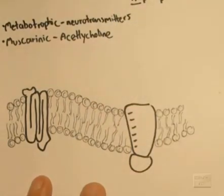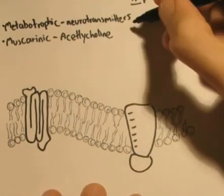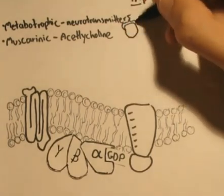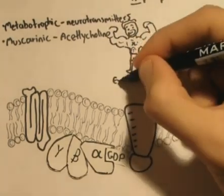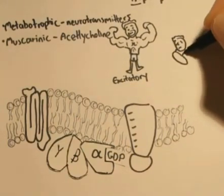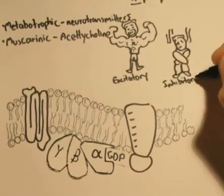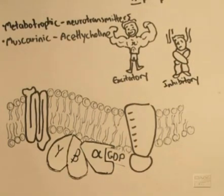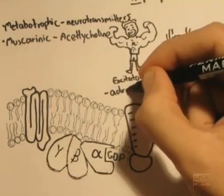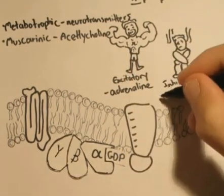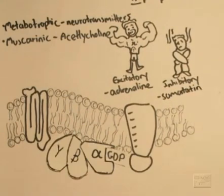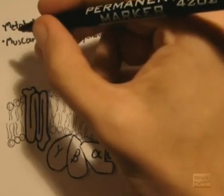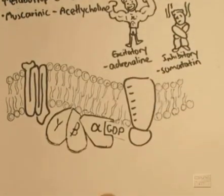Another point to make is that the alpha portion of the G-protein complex can also be excitatory, meaning promoting something, or inhibitory. Excitatory, as an example, can be adrenaline in the fight-and-flight response. And an inhibitory example can be somatostatin, inhibiting secretion of growth hormone. Remember, the alpha subunit can be excitatory or inhibitory.